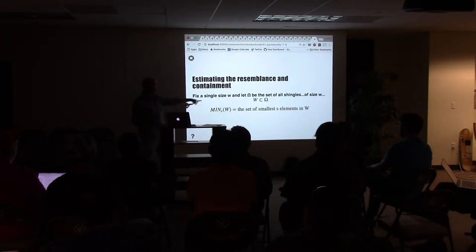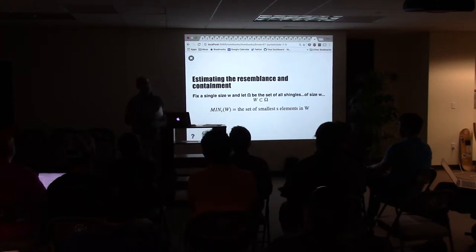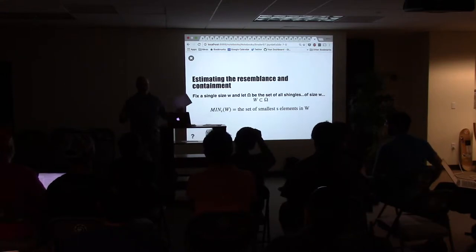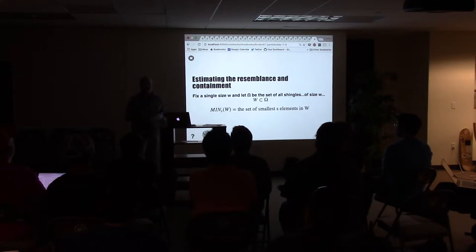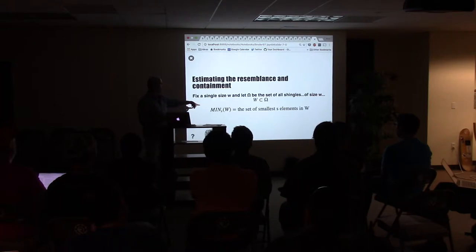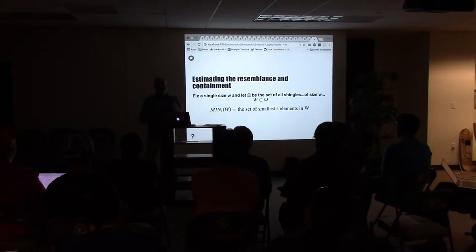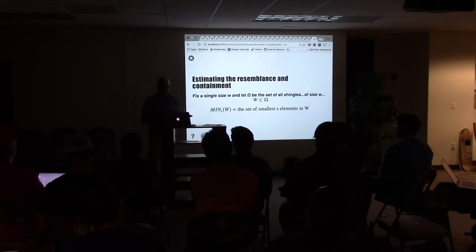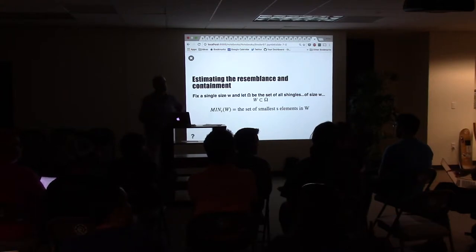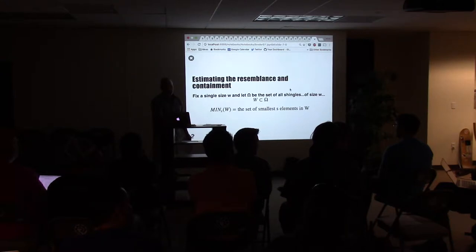He defines a couple of things preliminarily. First, he defines omega as the set of all possible shingles — of all possible documents. Then he defines this function min-s-w, which is the set of the s smallest elements in w. Omega is the set of all possible shingles of a fixed size w — you pick one shingle size for the whole exercise. And then this function defines the smallest items in that subset. This also implies that omega is ordered in some way. He makes the point in the paper that you can arbitrarily order it as long as it is totally ordered.